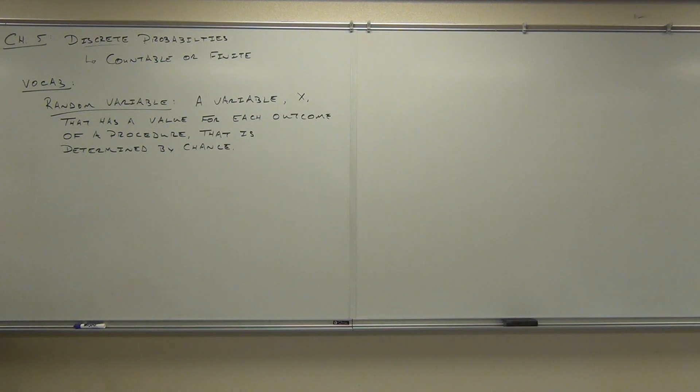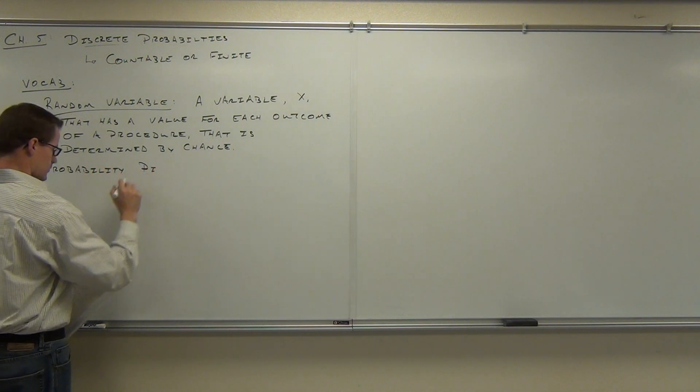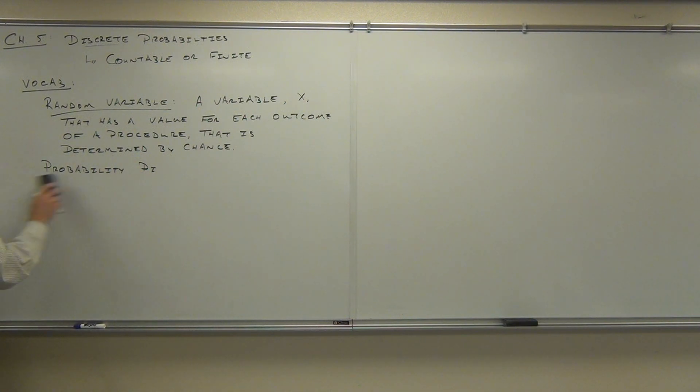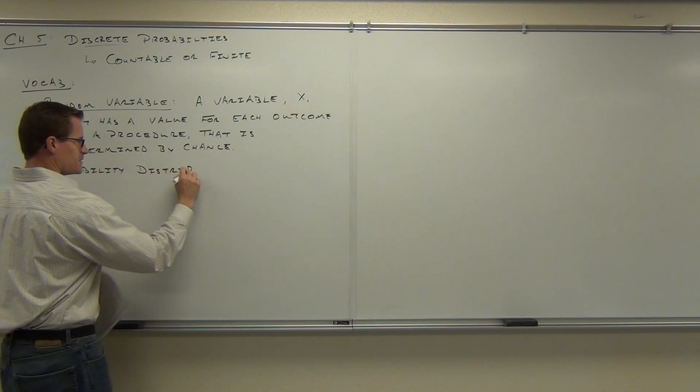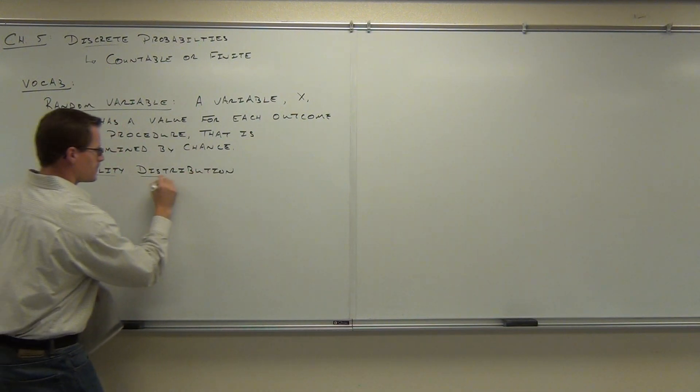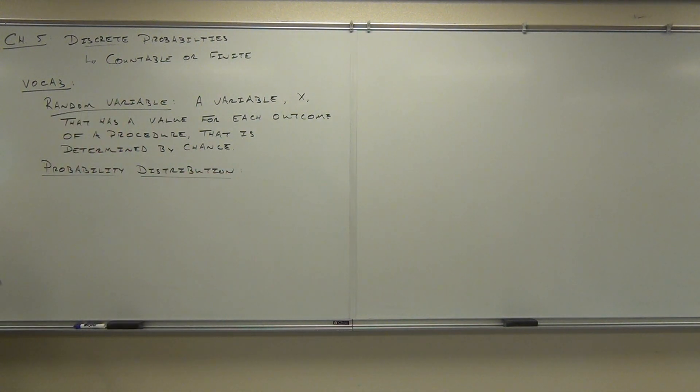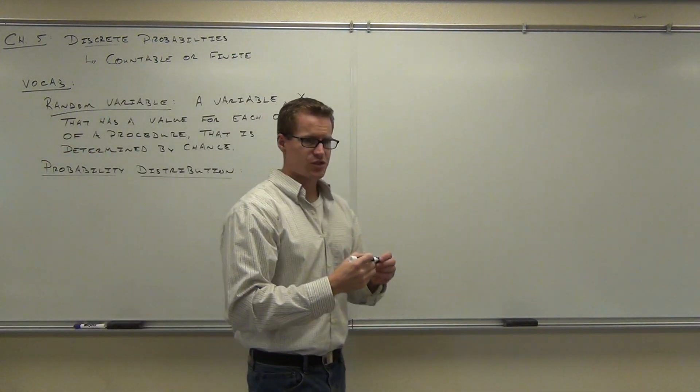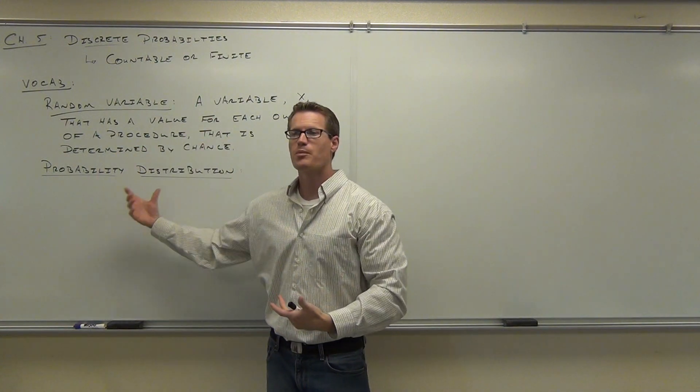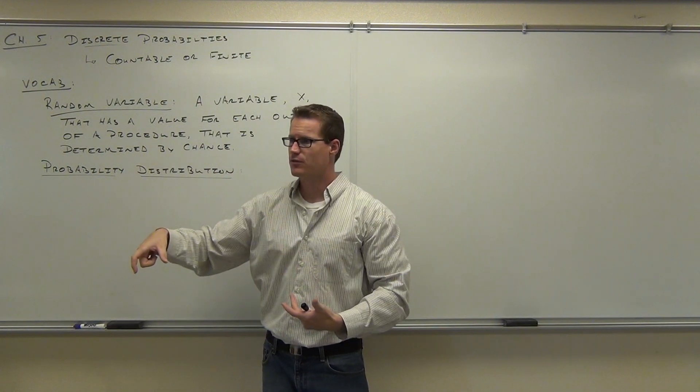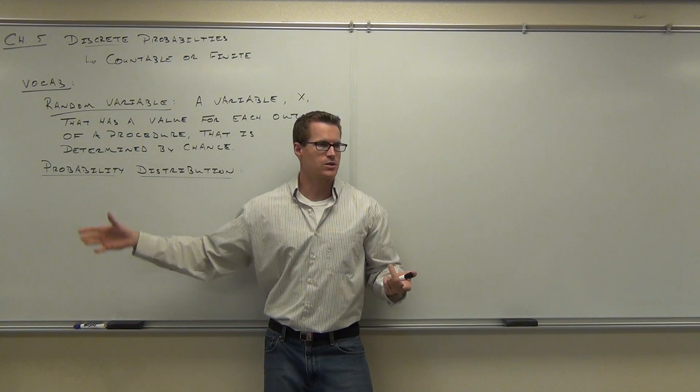So the other thing we've got to talk about is what's called a probability distribution. Distribution. Well, we've seen frequency distributions, haven't we? Frequency just took a certain number of classes, right? Instead of what amount we had for each class and put it in a table. That's exactly what a probability distribution does, except instead of classes, we have the possible outcomes. Or in other words, the values of my random variable.